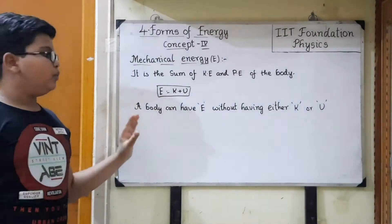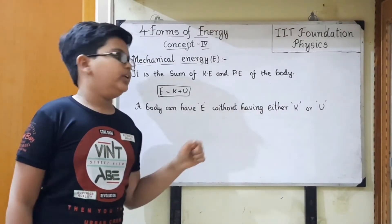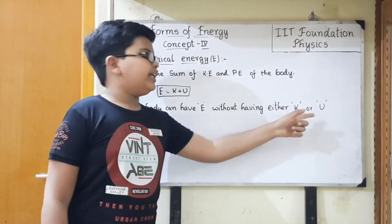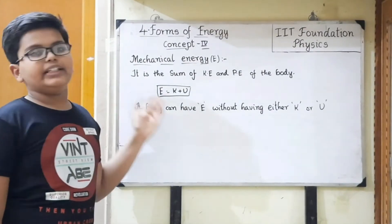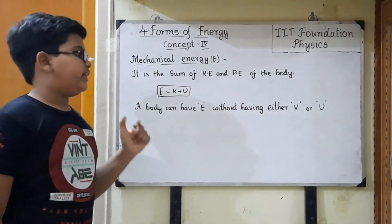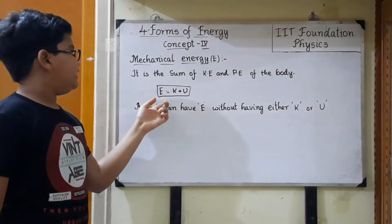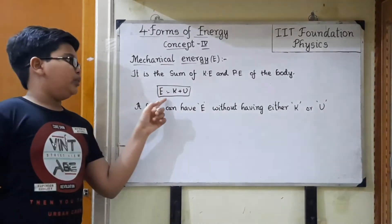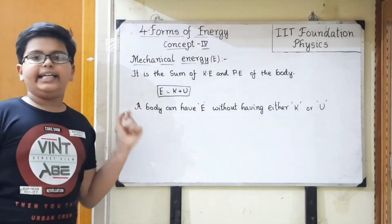A body can have mechanical energy E without having either one of K or U. If the body has only kinetic energy and no potential energy, we substitute 0 for U. So E equals K plus 0, which means E equals K — the mechanical energy becomes equal to the kinetic energy.